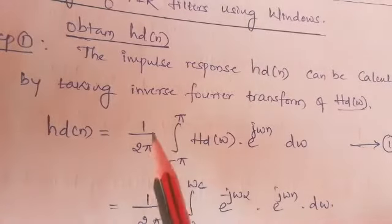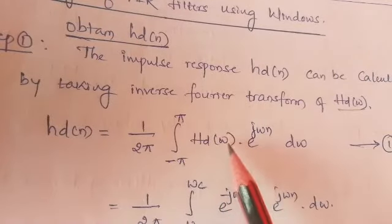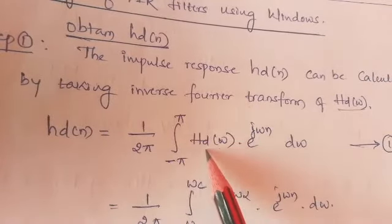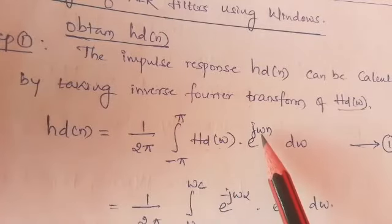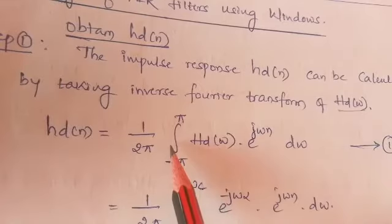Then we are getting hd(n) equal to 1 by 2π integration over the limits minus π to π Hd(ω) given term, given transfer function into e to the power jωn dω. It is the definition of inverse Fourier transform.